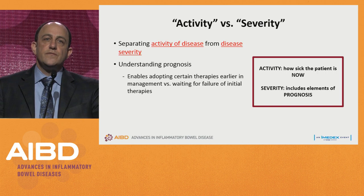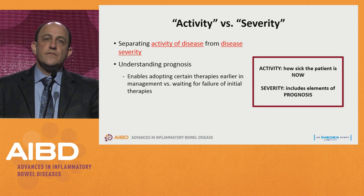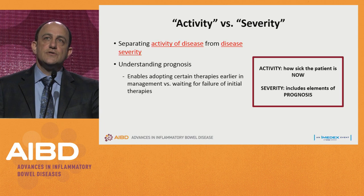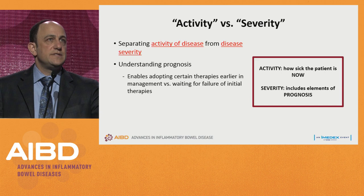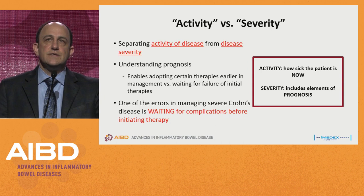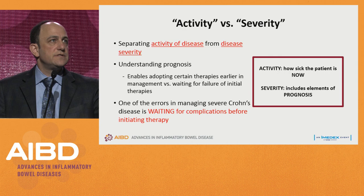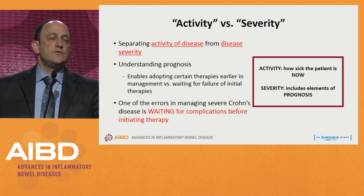You can have a patient who is in remission sitting in your office but who has a severe or poor prognosis. Your choice of therapy in a patient who may be doing well at this moment in time may be different, as should your follow-up and maintenance options. One of the errors in managing severe Crohn's disease is letting the patient declare themselves when you already know they have a poor prognosis — too often we're waiting for them to fail a therapy.